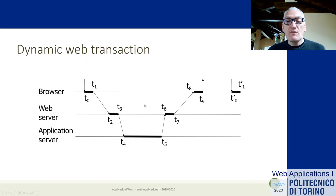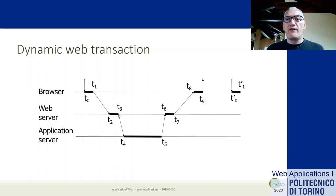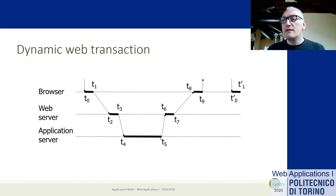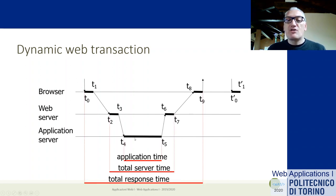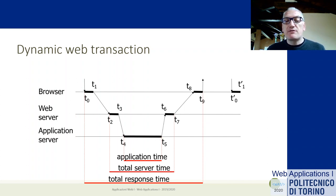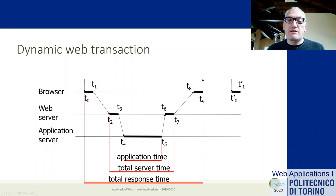Our timeline hasn't changed very much. The only difference is that when the web server analyzes the request, it won't look for the resource on the file system because it's not there. Rather, it will delegate to the application server, which will start running and generating the HTML. This is the time where the application server is running just for creating the HTML file. So we don't have just file exchange time but also computing time. In many cases the web server and the application server are physically contained in the same physical computer; in other cases they may be on different machines.